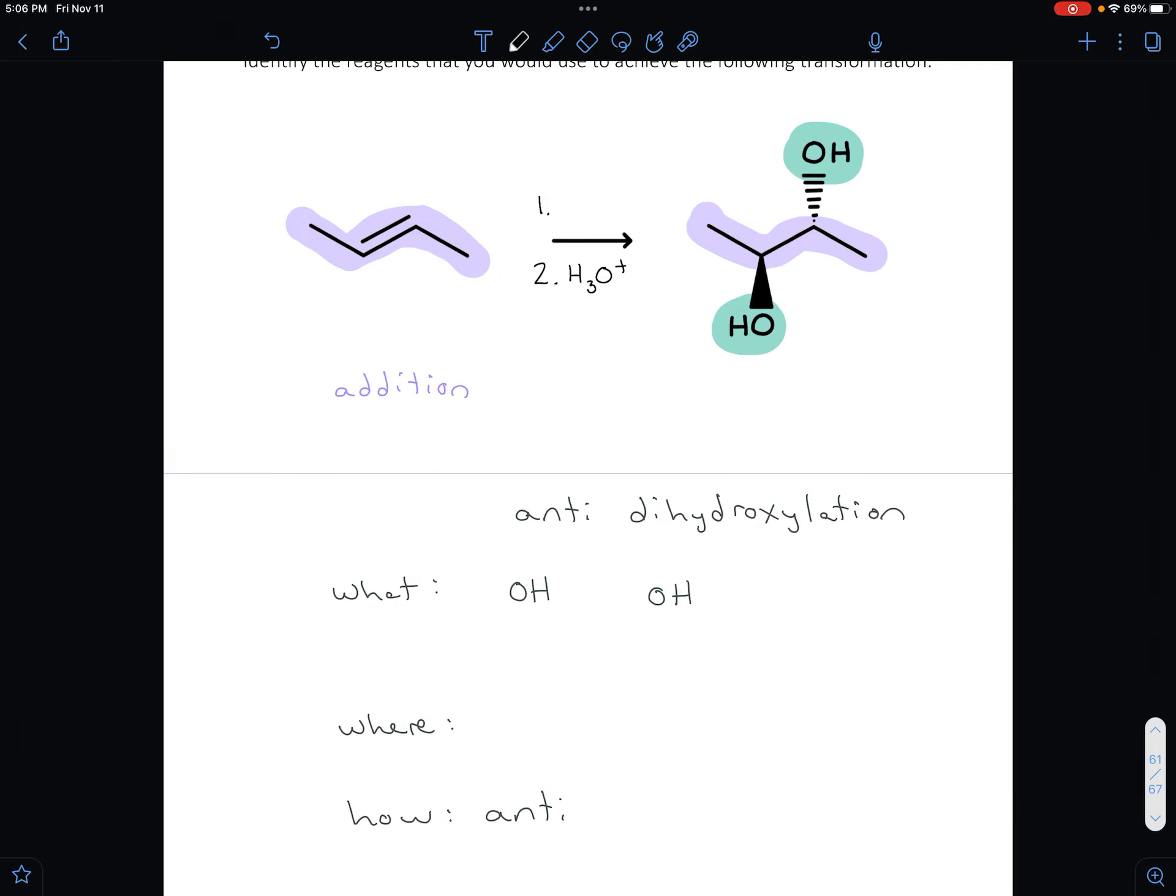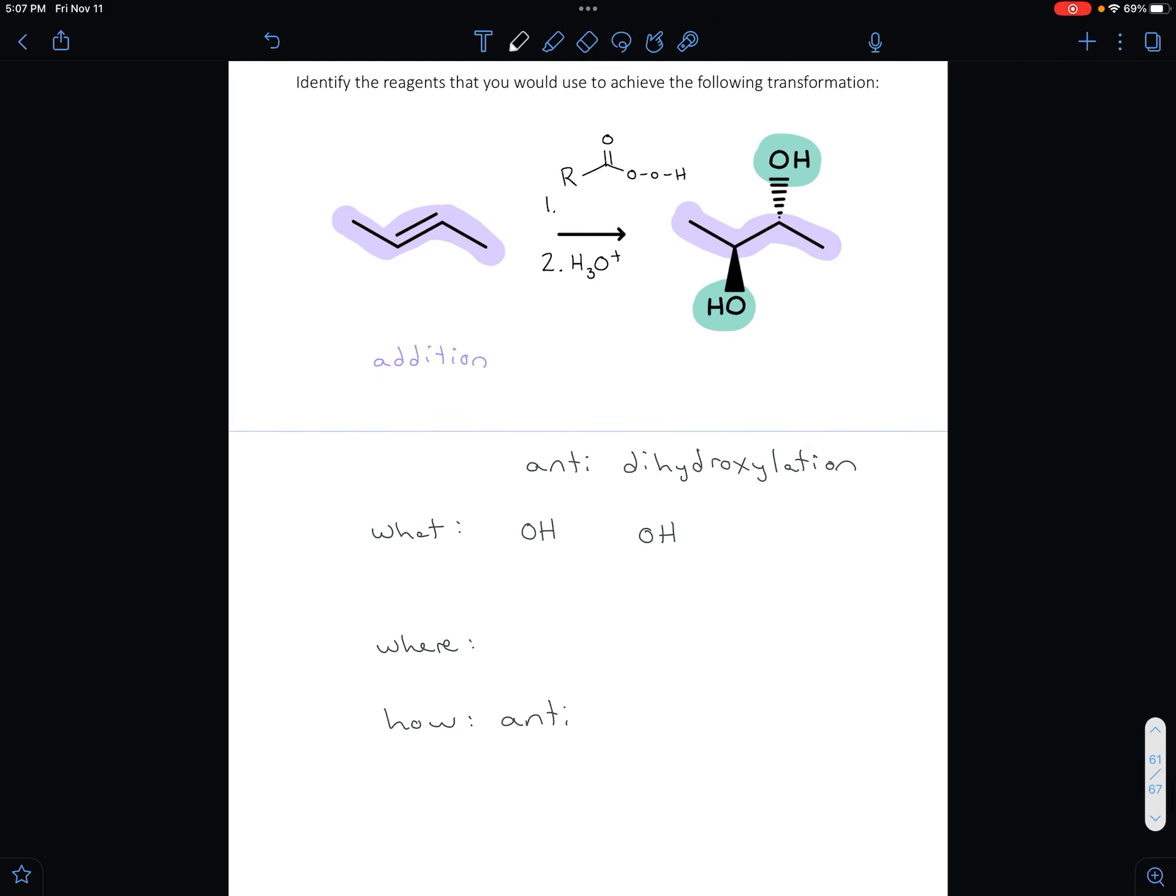In the first step, the peroxy acid you use can look different. The big idea is you just need some carbon chain with a carbon double bonded to an oxygen with two O's and an H. You could just draw that structure out, or you could draw a specific peroxy acid.